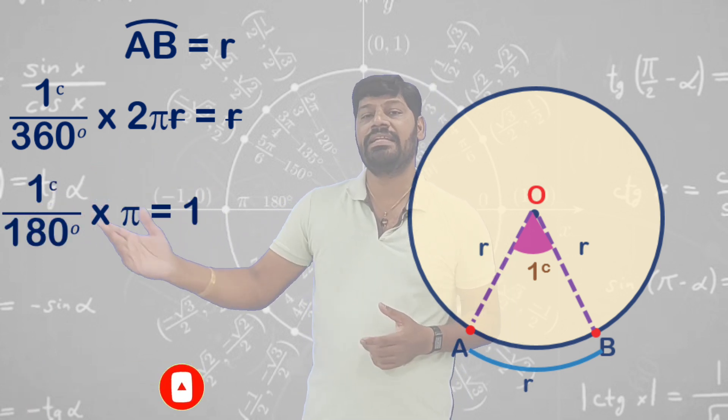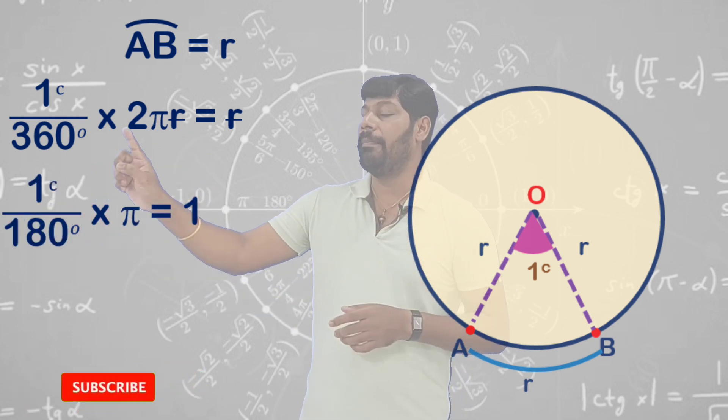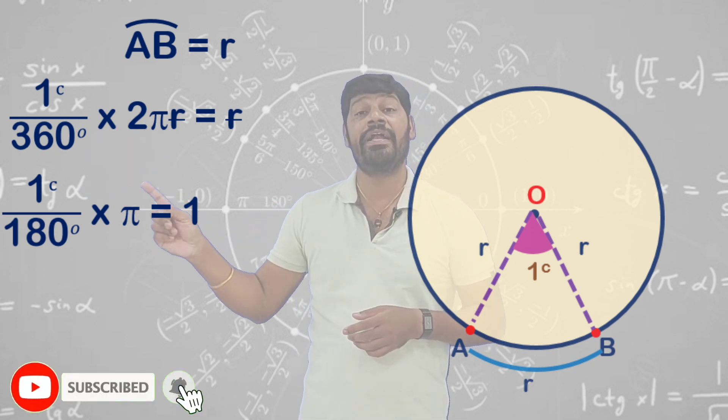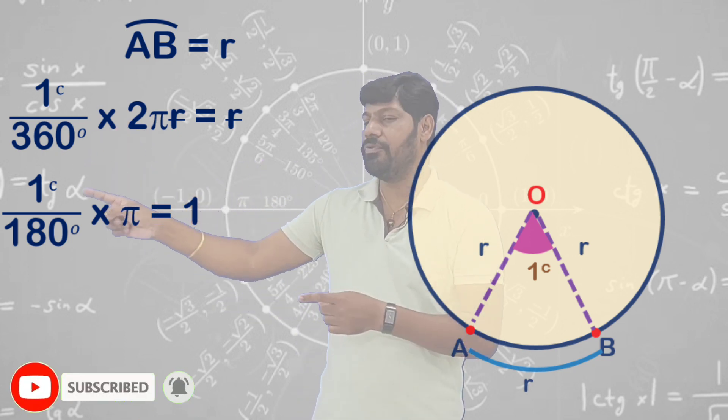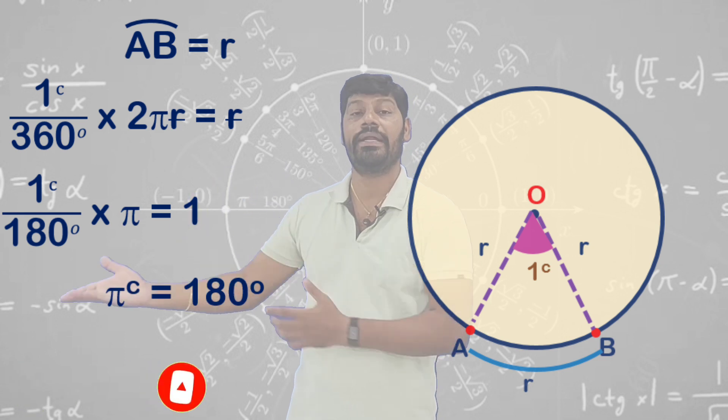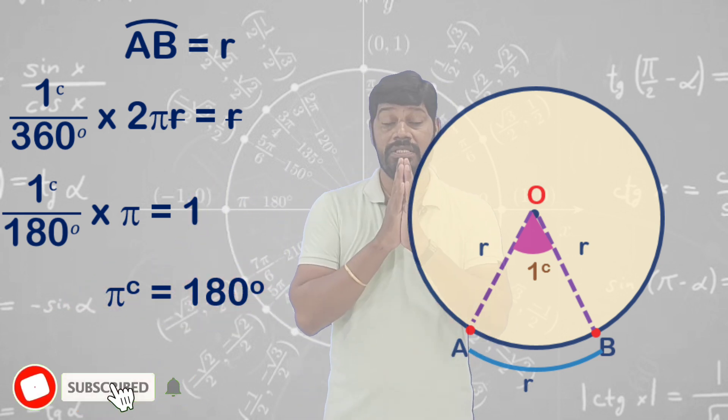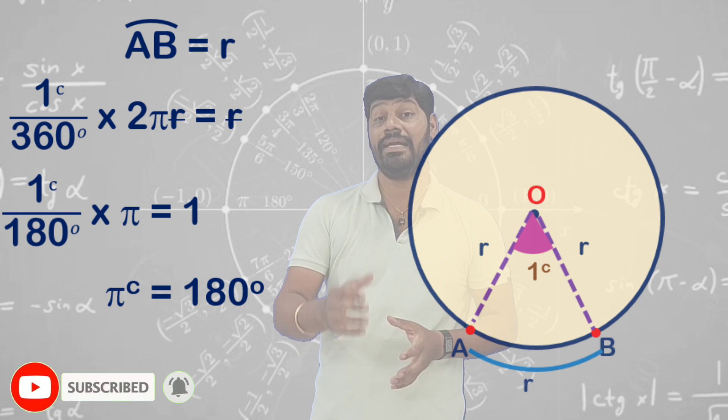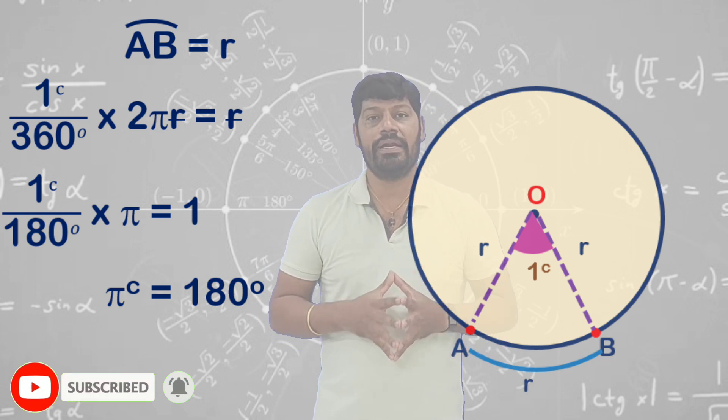If you cancel, you get 1 radian by 360 degrees times 2π. 2 and r cancel, 2 and 180 cancel. So what do you get? π times 1 radian divided by 180 degrees equals 1. If you transpose this, you get π radians equals 180 degrees. This is how we understand pi radians equals 180 degrees.